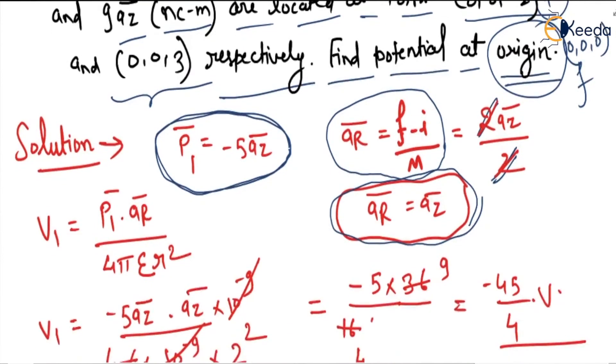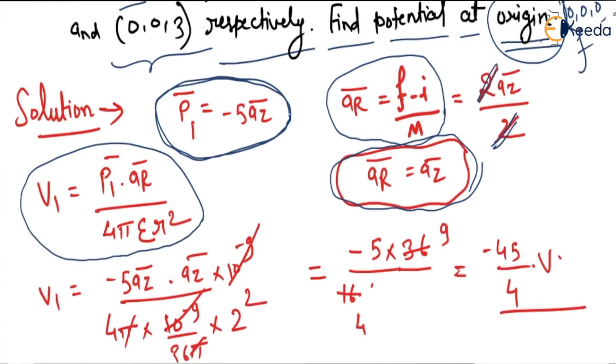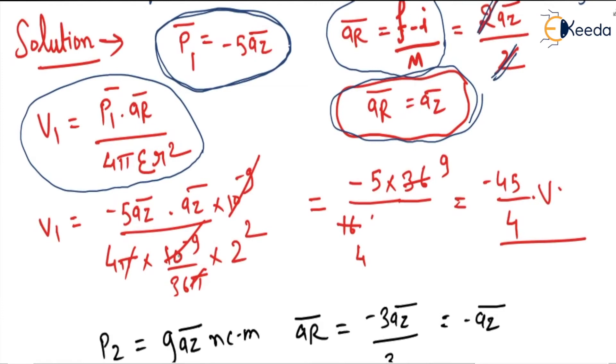So potential V1 is p1 dot ar divided by 4πεr². This is -5az dot az × 10⁻⁹ (because it's given in nano) divided by 4πε. Epsilon is 10⁻⁹/36π times 2², and solving this, the answer comes as -45/4 volts.